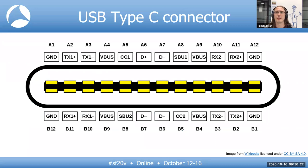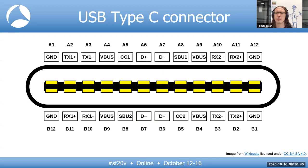The USB Type-C connector is reversible, so you don't have to worry which side is up — it works either way. In the middle there are the D-plus and D-minus signals, which are mirrored on the bottom so you can plug it in either way. The simplest USB devices with a Type-C connector only connect D-plus, D-minus, VBUS (the 5-volt supply), and ground.